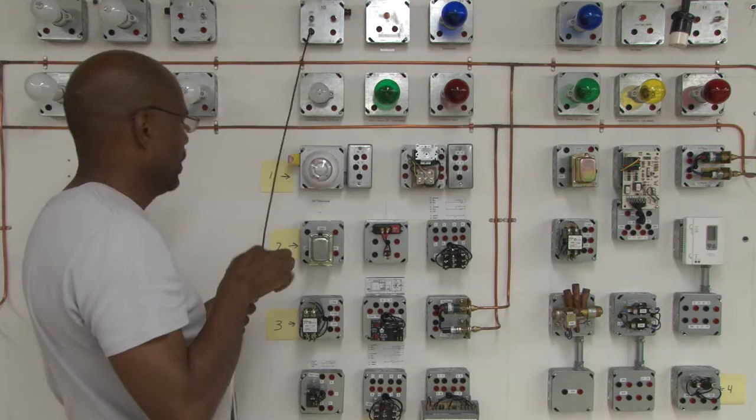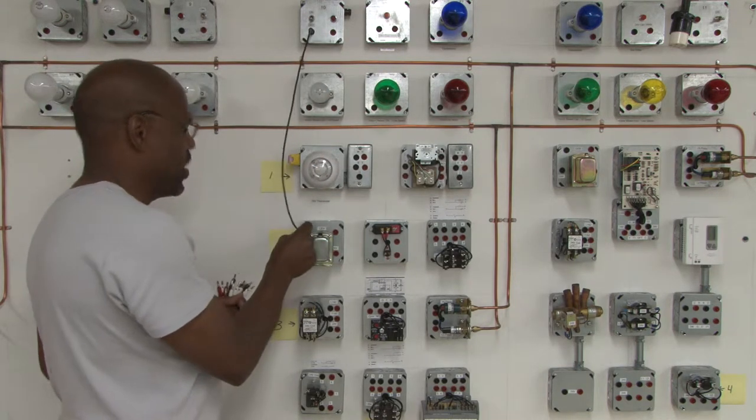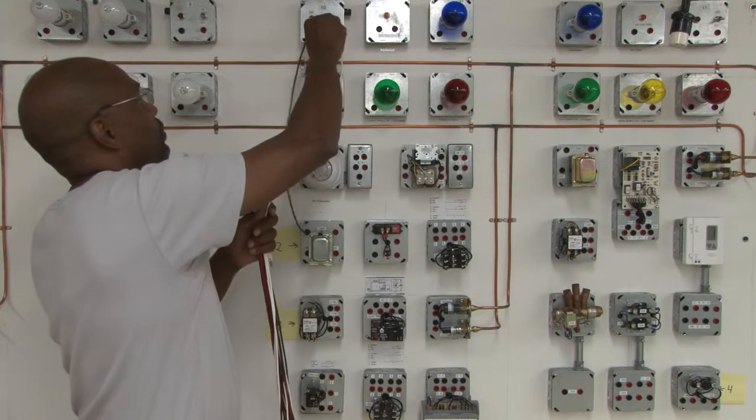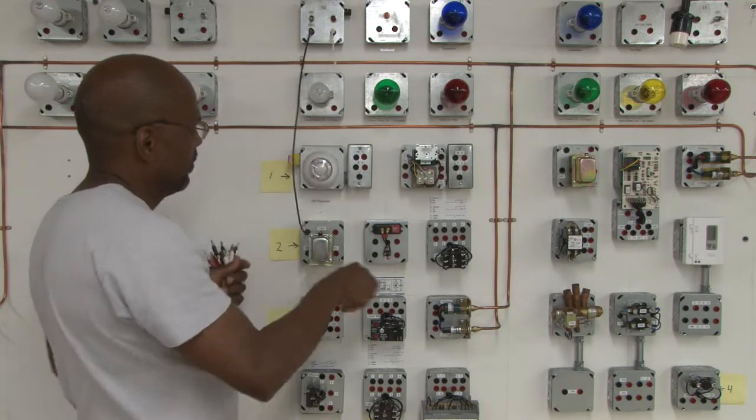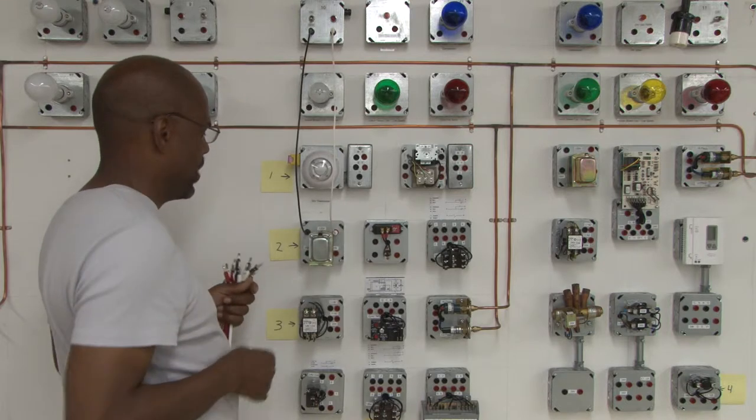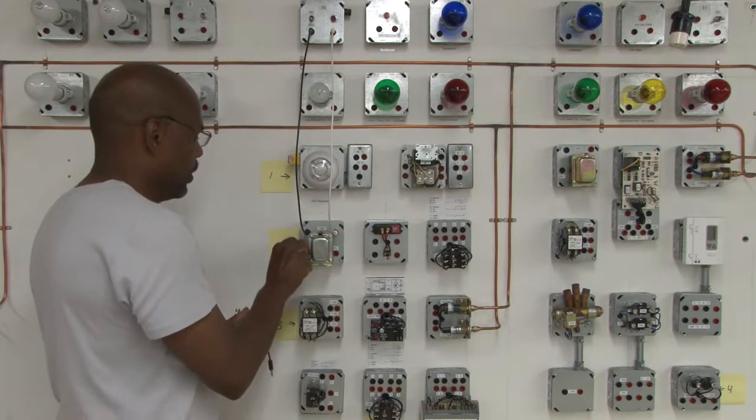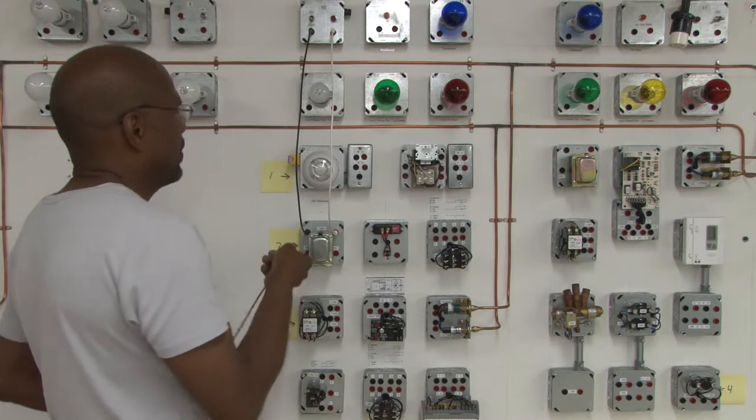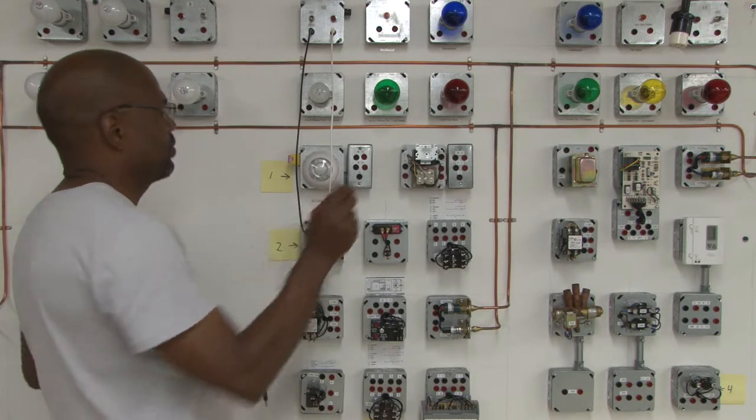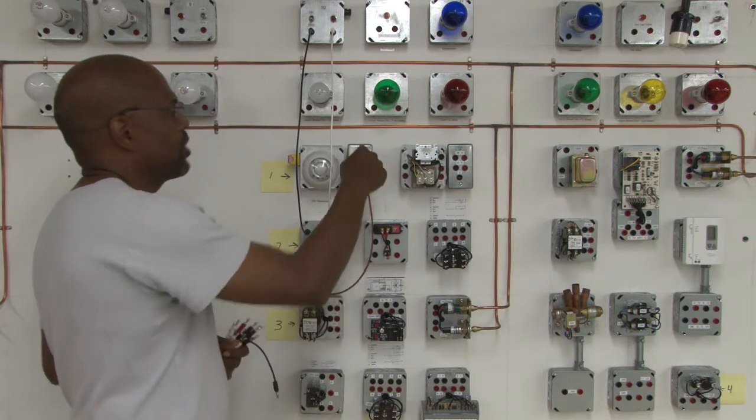We're going to go to our power source and bring it in to our transformer. It goes to the neutral side using white and we go to the other side of our transformer. We're going to come out of our transformer on the hot side and that will go straight to the thermostat because we want to switch our hot side.